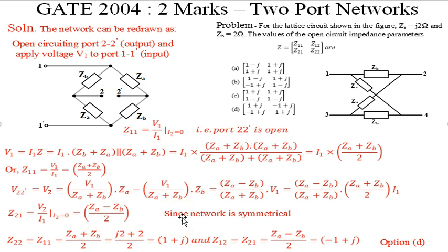We have determined Z11 and Z21, and here the network is symmetrical. We see here the network is symmetrical. So Z22 should be equal to Z11, that means (Z_A + Z_B) divided by 2. j2 plus 2 divided by 2, this is 1 plus j. And Z12 should be equal to Z21. So this is (Z_A - Z_B) divided by 2, this would be -1 plus j. These are the values here.